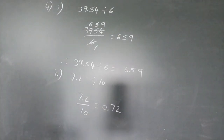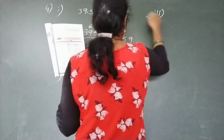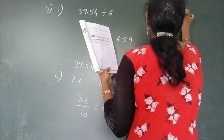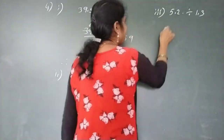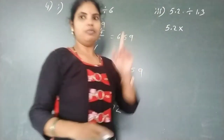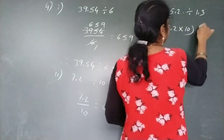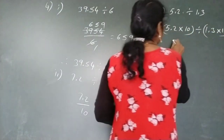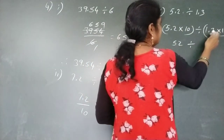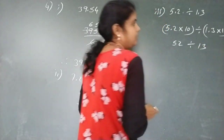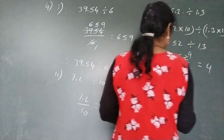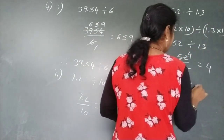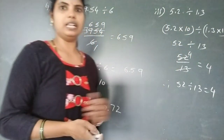Next, third: divide 5.2 by 1.3. The divisor 1.3 has 1 decimal digit, so multiply both by 10. 5.2×10 = 52, and 1.3×10 = 13. So 52 divided by 13 equals 4. There is no decimal point, so the answer is 4.